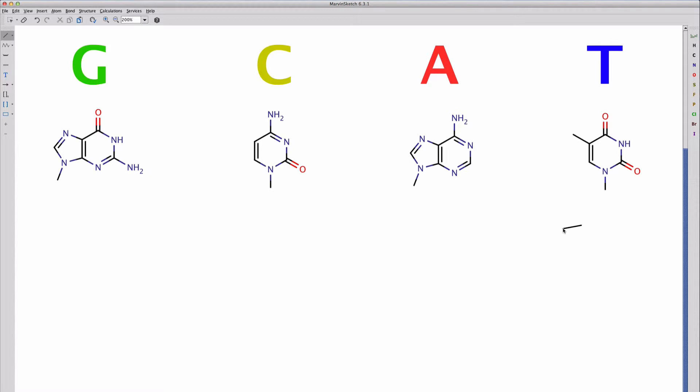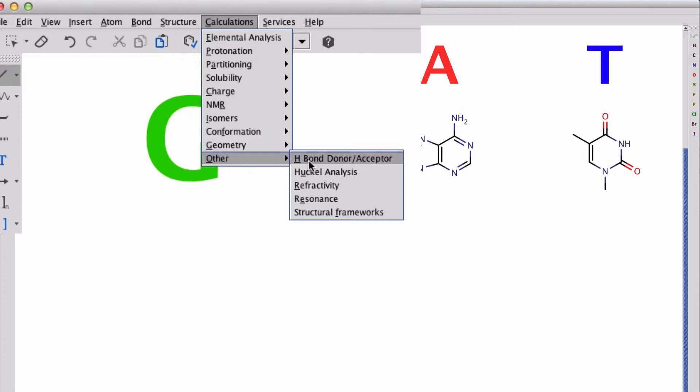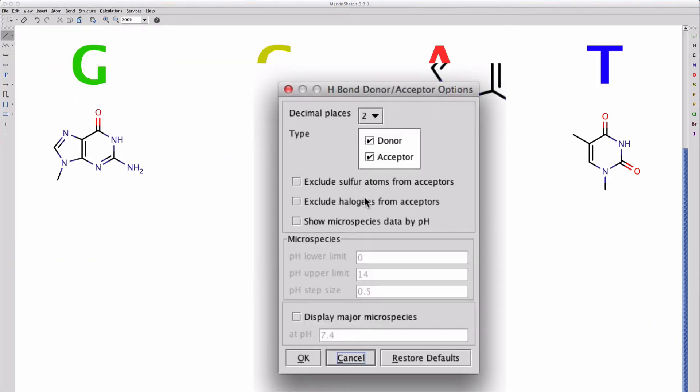Now let's calculate the hydrogen bond donors and acceptors in each of these nucleobases. You'll find this function under the Calculations menu. Go down to Other, Hydrogen Bond Donor Acceptor, then go ahead and accept the settings that I have for you here. Click OK.